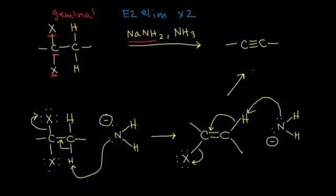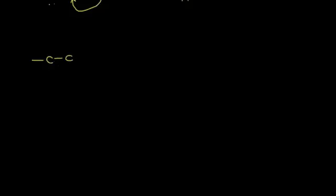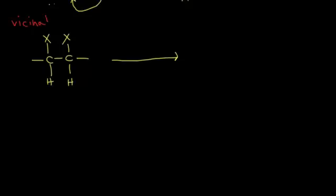You always have to have your base in excess if you're trying to do this. Now let's look at a very similar reaction — a double E2 elimination — but this time the halogens are not on the same carbon. We have two halogens on adjacent carbons; this is called a vicinal dihalide, as opposed to the geminal dihalide we just saw. A vicinal dihalide will react in a very similar way if you add a strong base like sodium amide using ammonia as your solvent, and you're going to form an alkyne once again via a double E2 elimination.